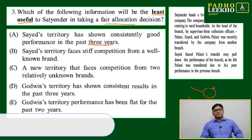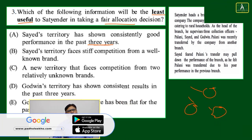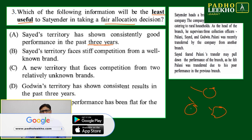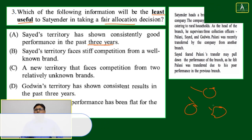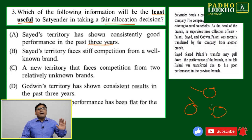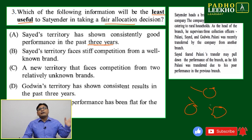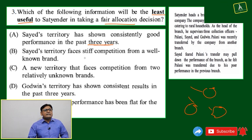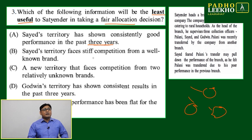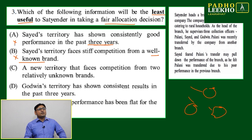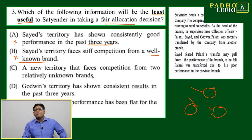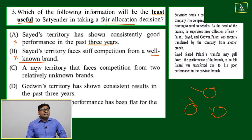Suppose three persons — Palani, Satyandar, and Godwin — are allocated to three sales territories. He wants to reallocate them. Then which factors or information are least useful for a fair allocation of Satyandar? Say a territory faces stiff competition from a well-known brand — if it is a well-known brand, it is not least useful, it will be useful.